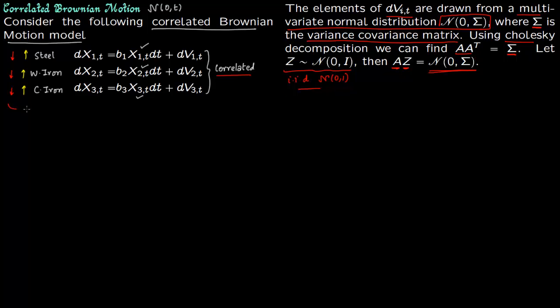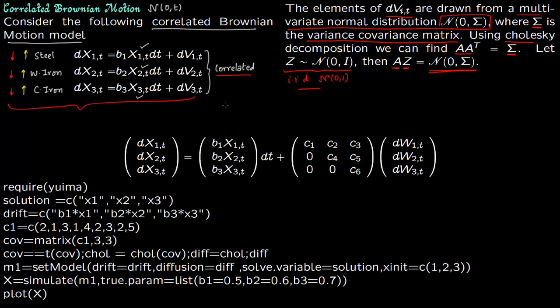So we will rewrite this equation above like this. So first focus on the left hand side. So I have copied all the terms here, x1t, x2t, x3t, and then drift b1*x1t, b2*x2t, b3*x3t, and this is correlated random variables.